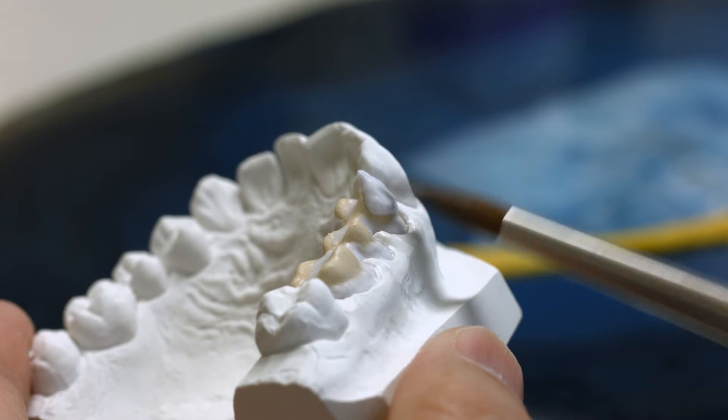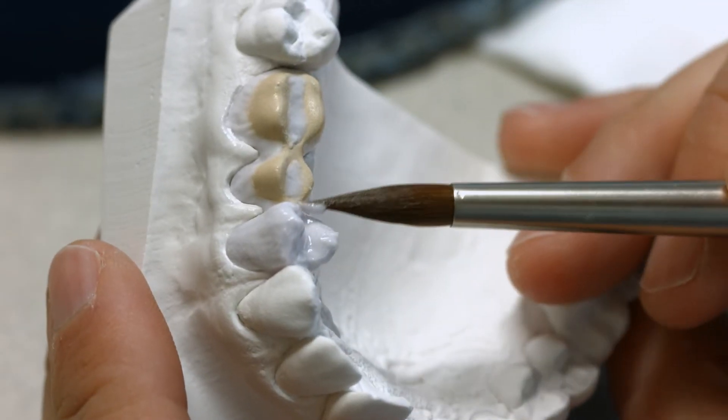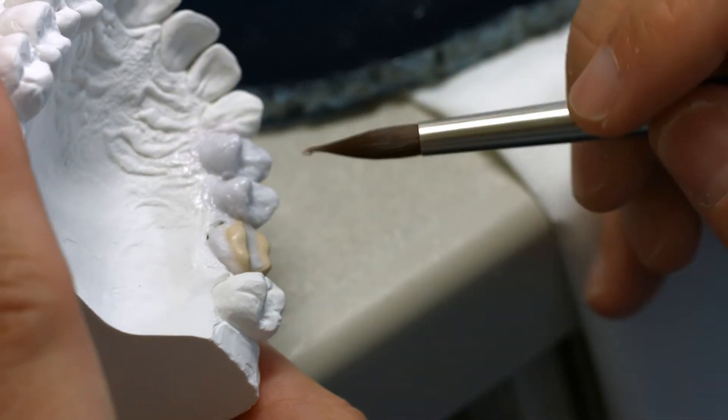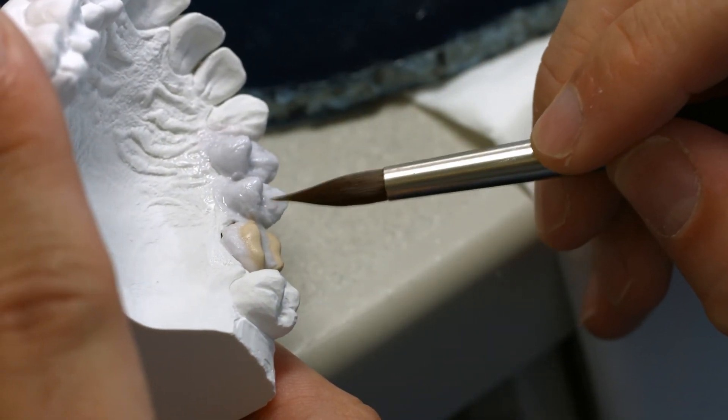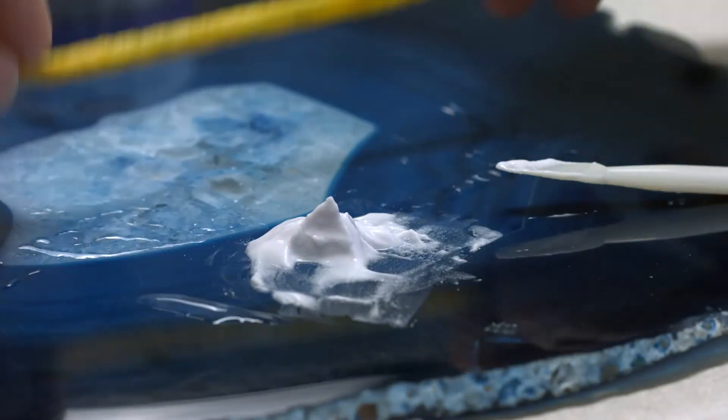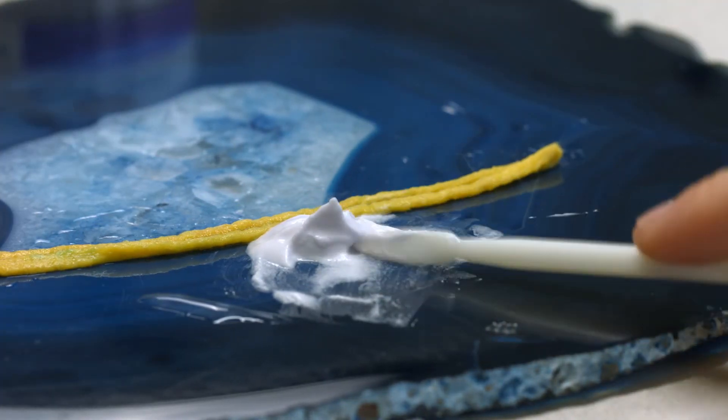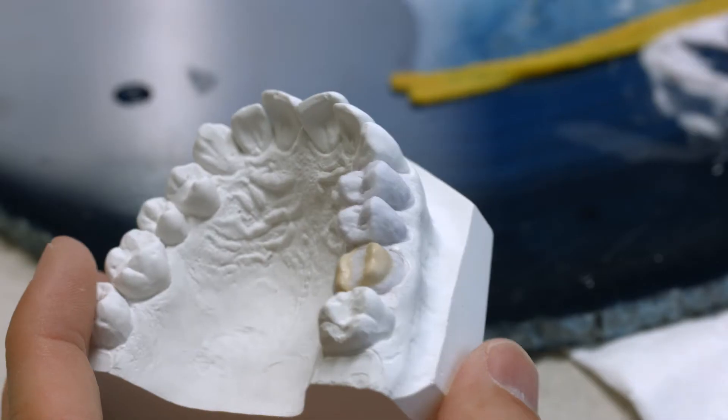Completely layer the opaque metal framework with IPS Style Ceram-1 and make sure to include all the details. It's important to over-contour the restoration. Use only distilled water to re-wet mixed or applied layering materials in order to avoid the accumulation of organic components.